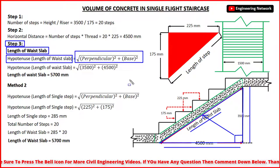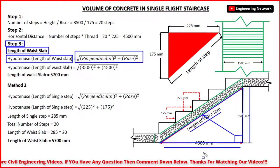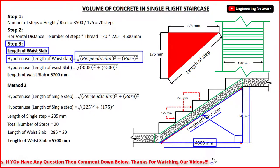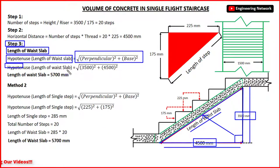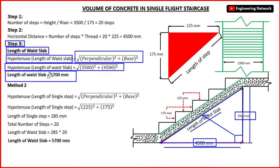Here the base of this triangle, which is the total horizontal length of the staircase, is 4500 mm, and the perpendicular is 3500 mm. After putting the values, the length of waist slab is equal to 5700 mm, which is equal to 5.7 m.